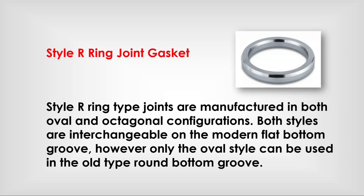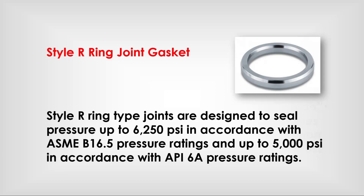Style O ring-type joints are manufactured in both oval and octagonal configurations. Both styles are interchangeable on the modern flat-bottom groove; however, only the oval style can be used in the old-type round-bottom groove. Style O ring-type joints are designed to seal pressure up to 6,250 psi per ASME B16.5 pressure ratings and up to 5,000 psi per API 6A pressure ratings.